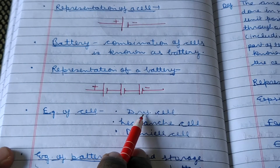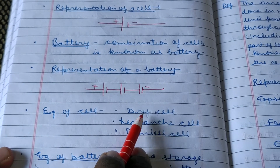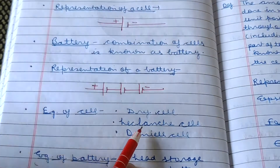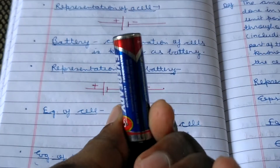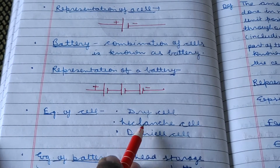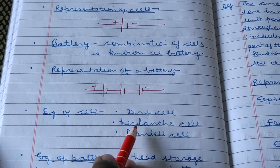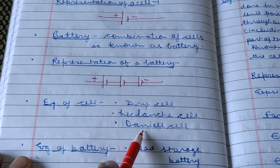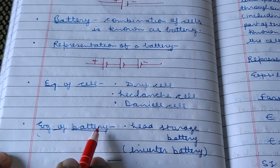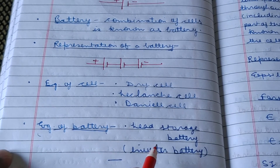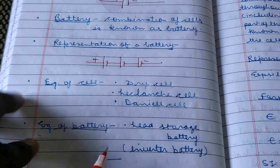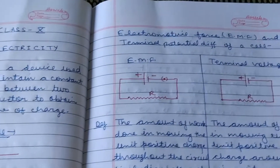Examples of cell: the cell most commonly used in our daily life is the dry cell. The original form you can see in your physics lab is the Leclanche cell, and there is also the Daniel cell. These are examples of cells. An example of a battery also very common in daily life is the inverter battery, also known as the lead storage battery. These are the introductions of cell and battery.